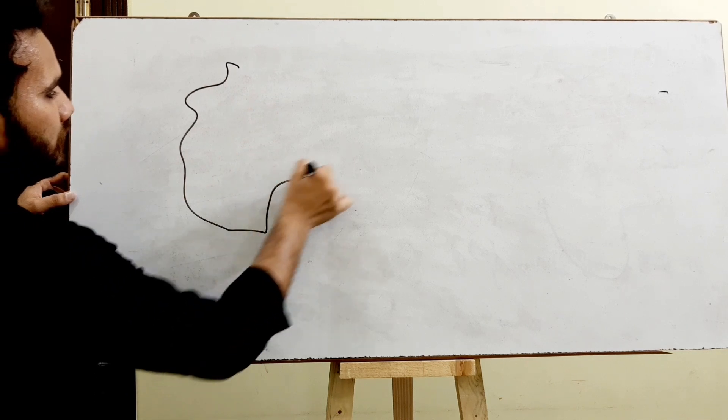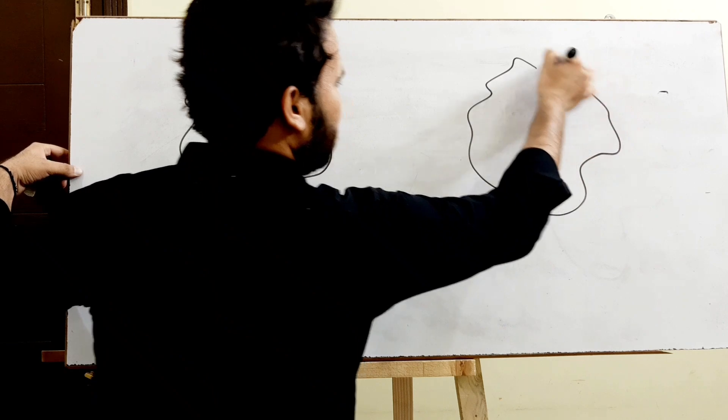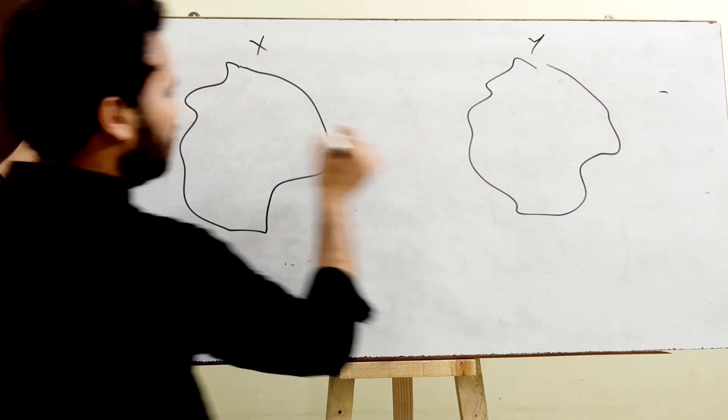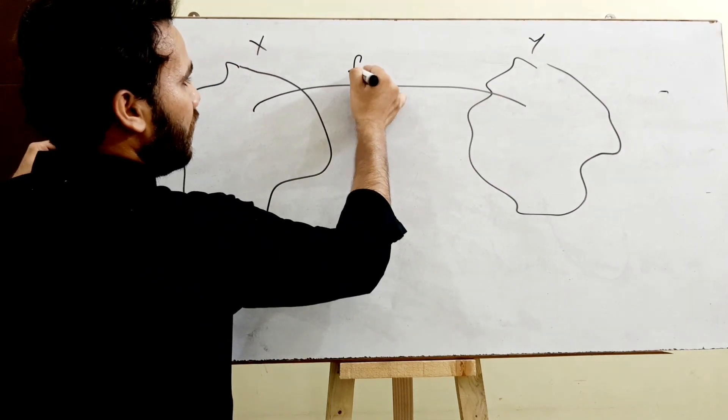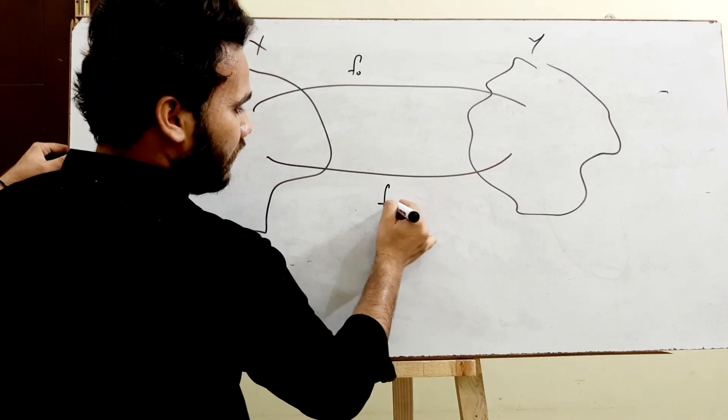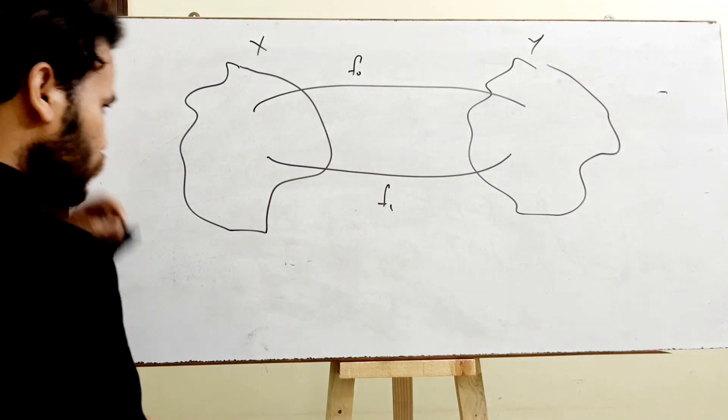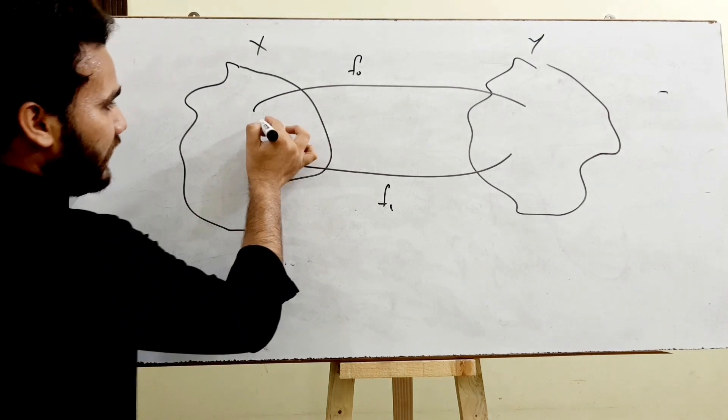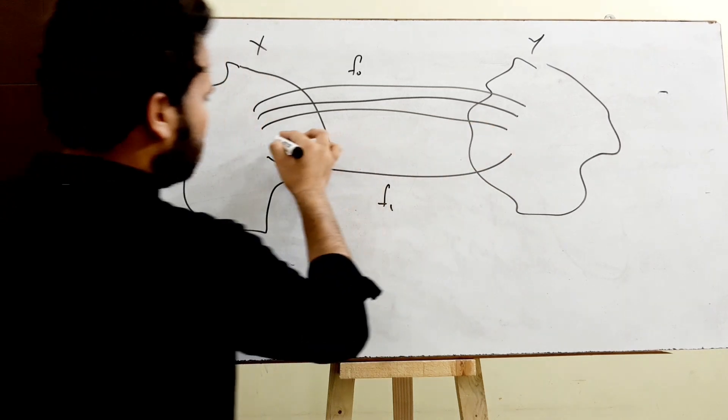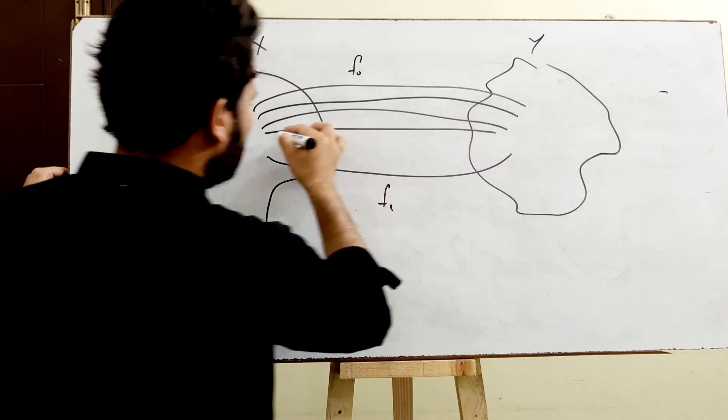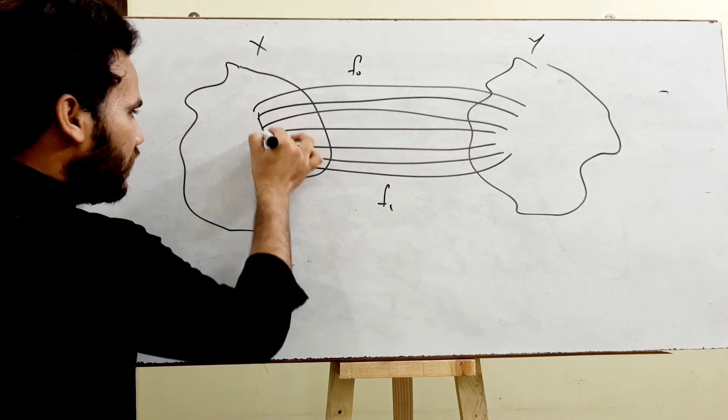Or graphically, assume that this is one topological space and this is another topological space. Let's say this is X and this is Y. And we are going to define this as F0 and another one, this is F1. So these are two curves from X to Y. If there exist such maps, such curves, then these curves are nothing but the homotopy between F0 and F1.